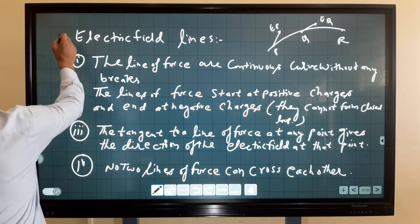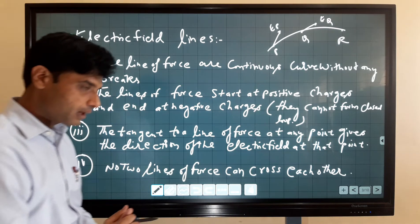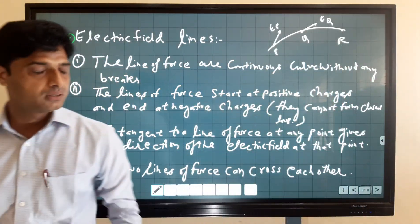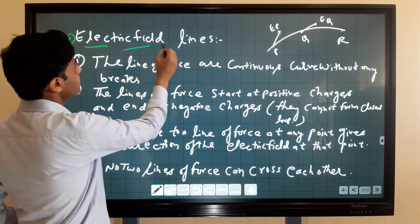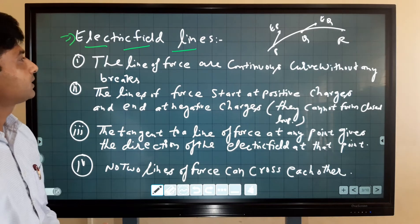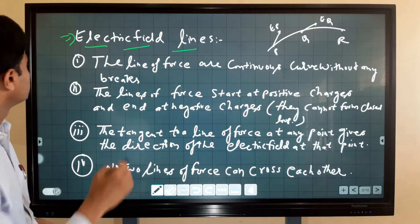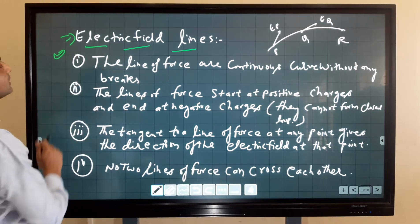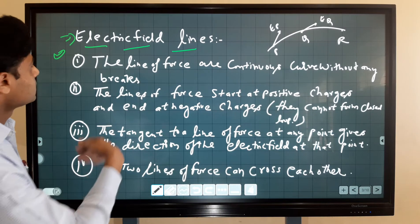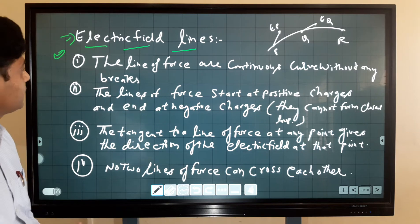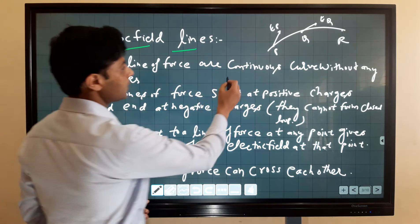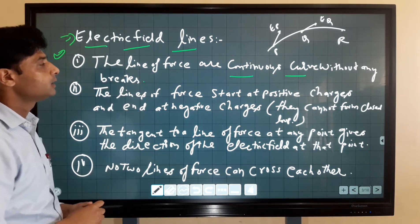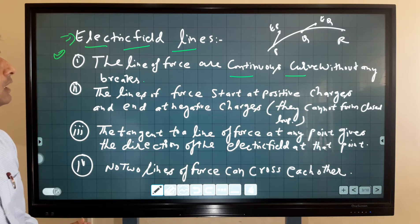The next topic is electric field lines. Electric field lines are imaginary lines that denote the direction or configuration of the electric field. The first property is that electric field lines are also known as electric lines of force. Electric lines of force are continuous curves without any break.